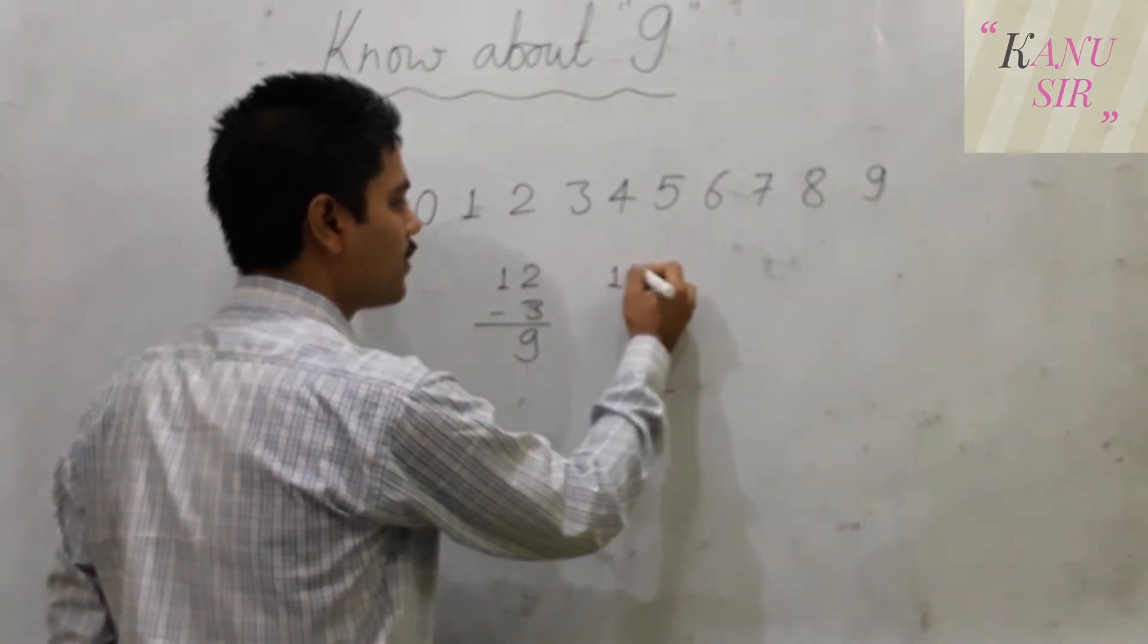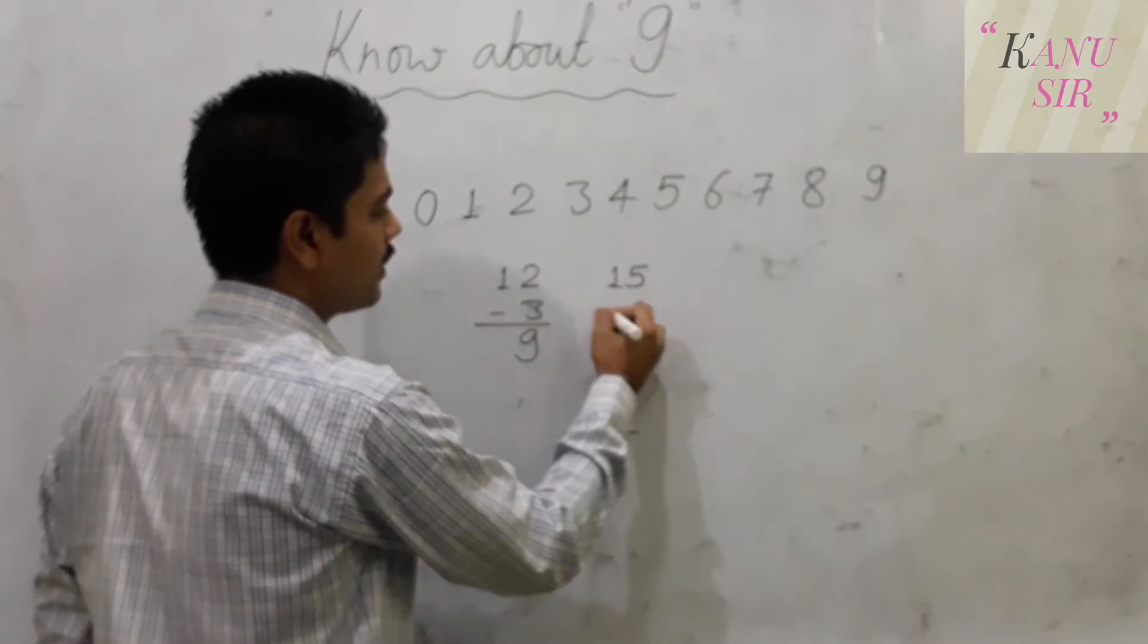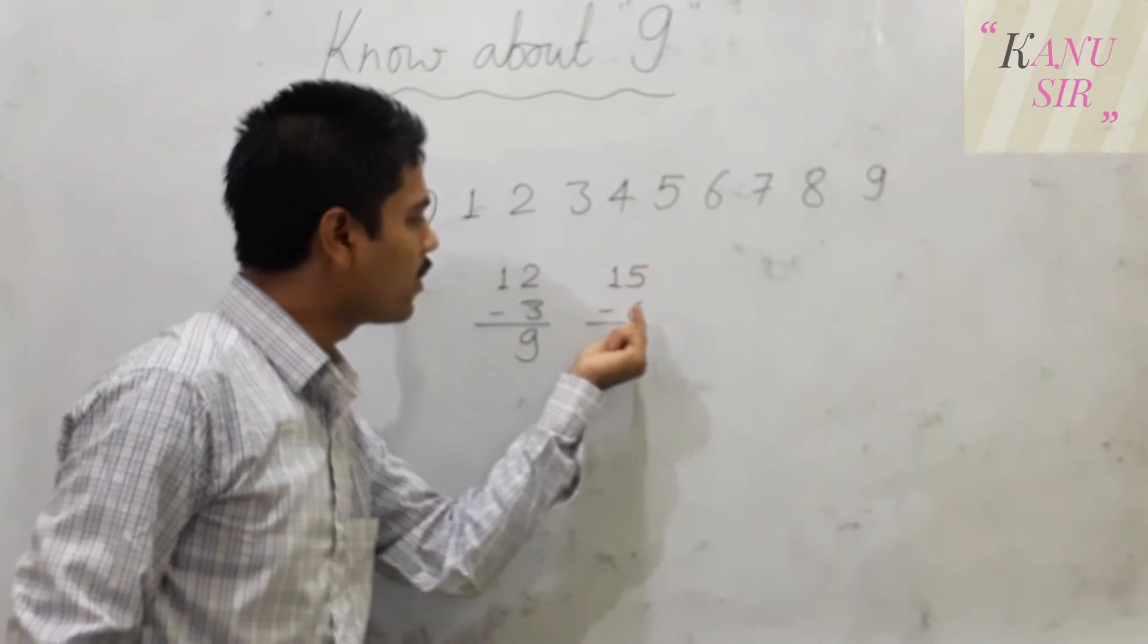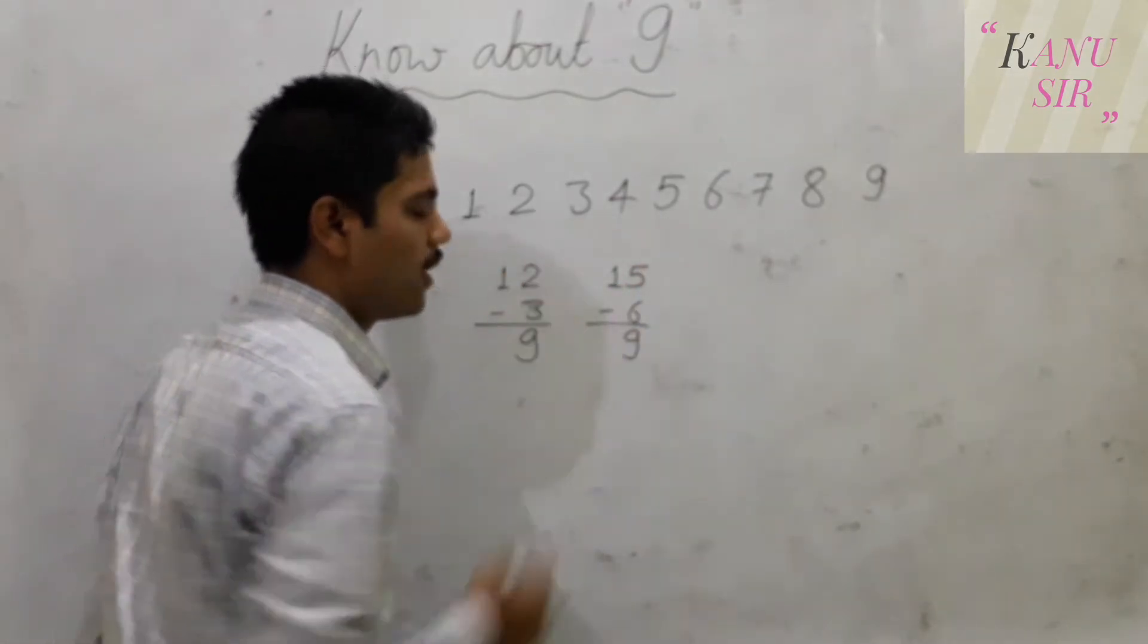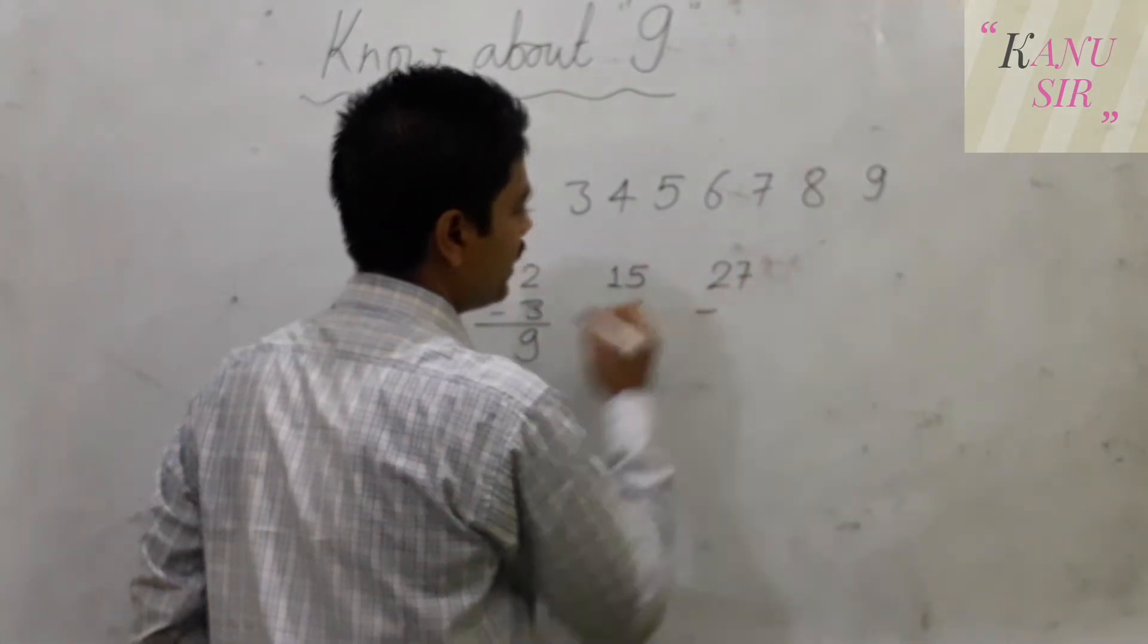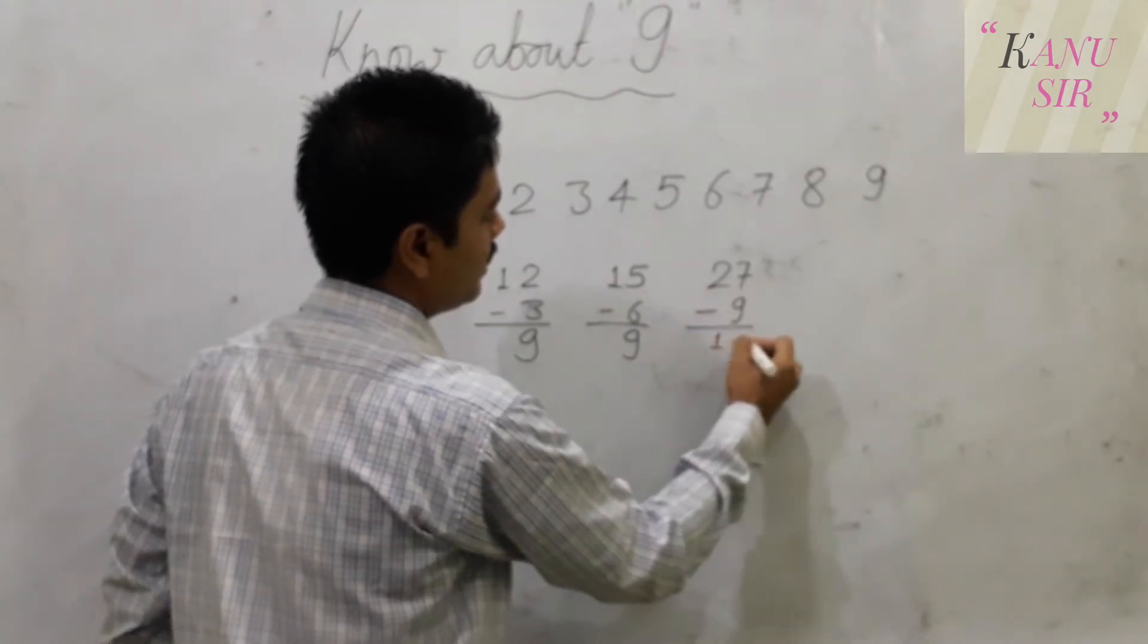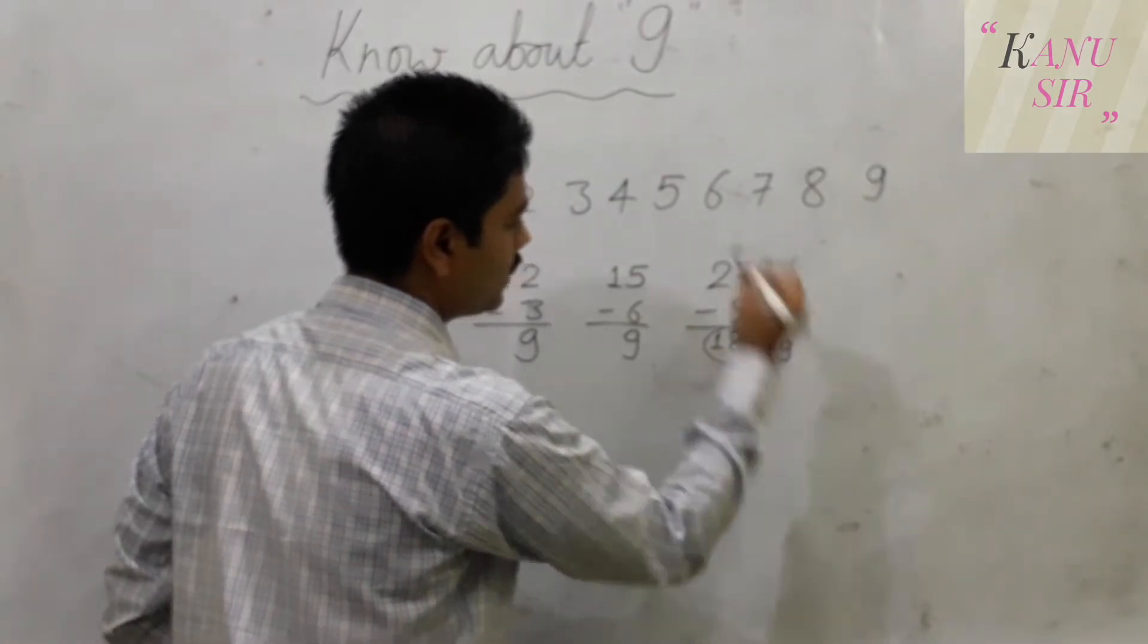Let us go another number, 15. So 5 plus 1 is 6. Subtracting the sum of the digits with the digits will give us 9 around it, 9 are the product of 9. So let us write 27 minus, 7 plus 2 is 9. Then we will get 18 that is the product of 9 and hence it also sums up to 9.